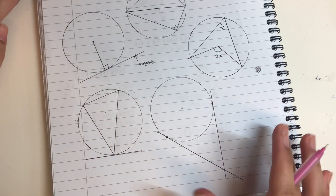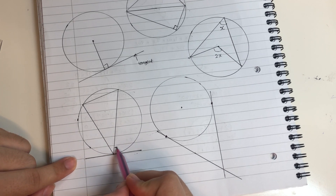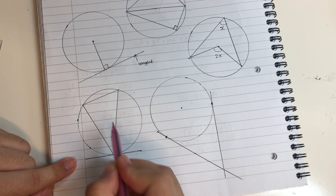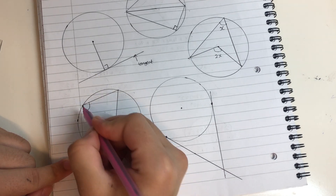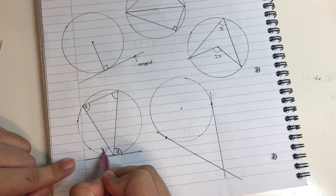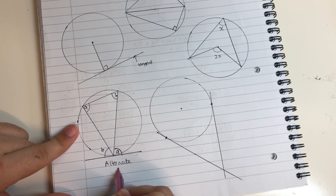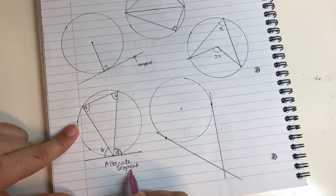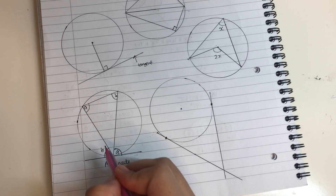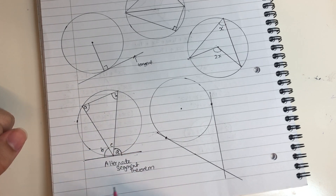Our next circle theorem involves a tangent where one corner of a triangle meets the tangent. This angle here is the same as this angle here — let's call it A. This angle here is the same as this angle here — let's call it B. This is called the alternate segment theorem. For argument's sake, let's call the remaining angle C. A plus B plus C adds to give 180 degrees, because they are either inside a triangle or on a straight line.